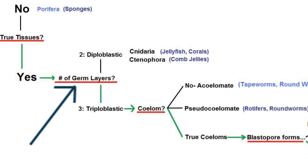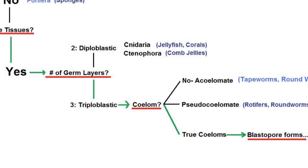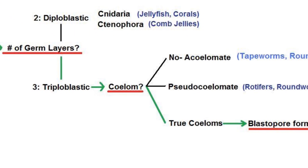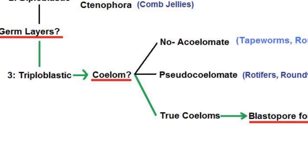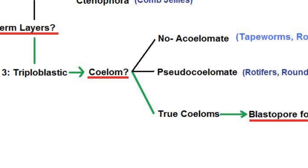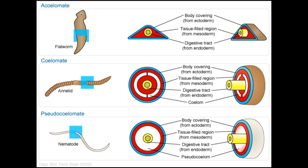If an organism is triploblastic, we can then go on to check whether or not it has a coelom, which is a body cavity. Organisms which do not have body cavities or true body cavities are called acoelomates, and those are tapeworms and flatworms. There are other organisms which are pseudocoelomates — as the name implies, they don't have a true, properly designed body cavity lined by mesoderm. Examples of these are rotifers and roundworms. All the remaining organisms in the tree of life do have a true coelom that's properly lined by mesoderm.